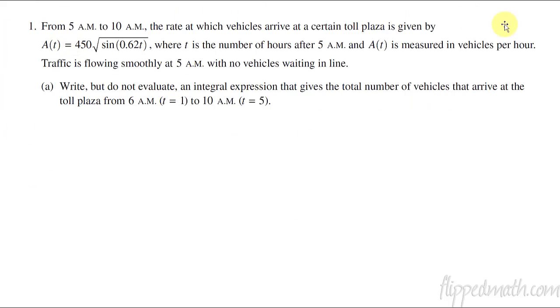All right, so part A. Sometimes what you really need to do is when you read these problems, I just kind of glance through it real quick, get a little bit of a gist of what's happening. From 5 to 10, the rate at which vehicles arrive at a certain toll plaza is—and I'm going to pay attention to that word rate. That is an important word right there, because what that's telling me is this is already a rate of change.